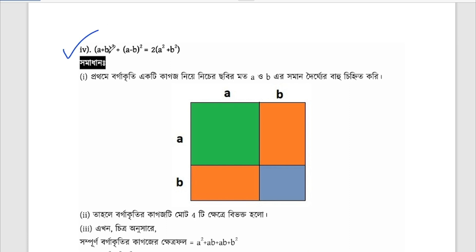A number: (a plus b) squared plus k(a minus b) squared equals 1, which is the same as 2 into (a squared plus b squared). From this, you can find a and b, and then find (a plus b) squared.